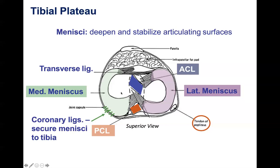We also have the coronary ligaments, found throughout but with more density in the posterior aspect of the menisci. They're there to attach the meniscus to the perimeter of the tibia.